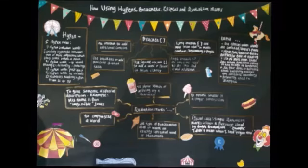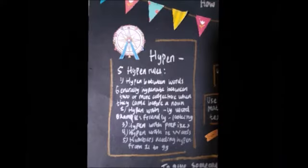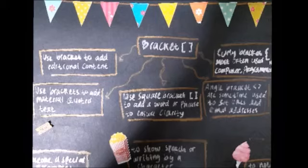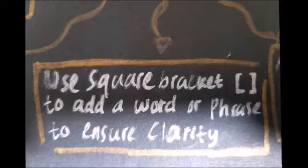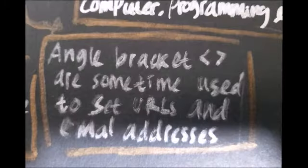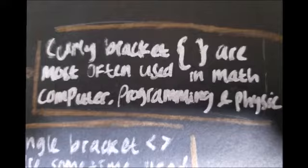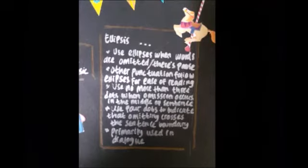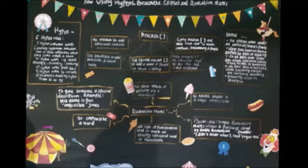Using hyphen, bracket, ellipses, and quotation marks. For the hyphen, there are five rules — one being to hyphenate between two or more adjectives before a noun. Brackets are used to add additional content and to add material to quoted text; types include square bracket, angle bracket, and curly bracket. Ellipses are primarily used in dialogue and when words are omitted. Quotation marks are used to show speech or writing by a character and to emphasize words.